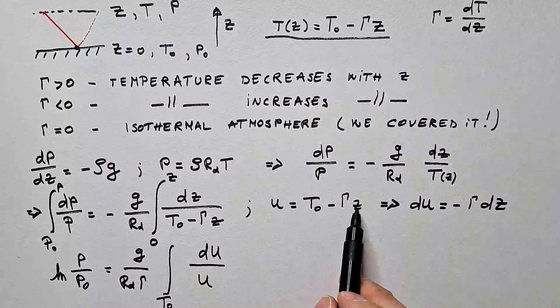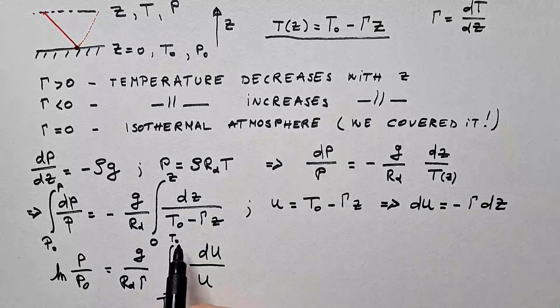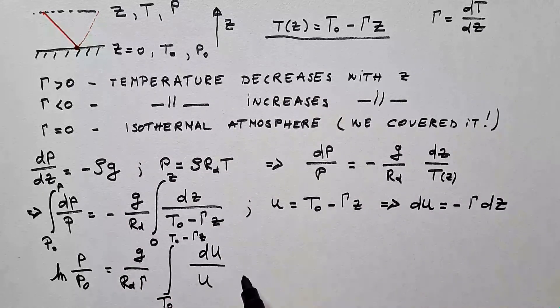And what are the new limits? Well, when z is 0, u is T₀. And when z is z, then u is simply this, T₀ minus γz.